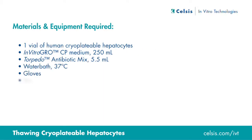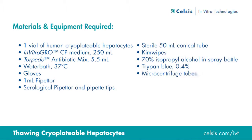You will need a vial of human cryoplateable hepatocytes, one 250 milliliter bottle of InVitroGRO CP medium, one 5.5 milliliter vial of Torpedo antibiotic mix, a water bath set to 37 degrees Celsius, gloves, a one milliliter pipetter, serological pipetter, and pipette tips.